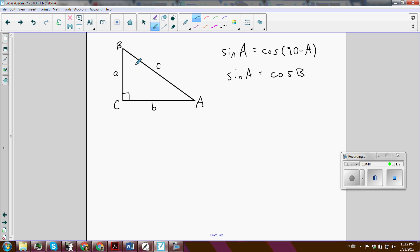So the sine of A is the opposite over hypotenuse, a over c, and the cosine of B is adjacent to B, which is a, over c.